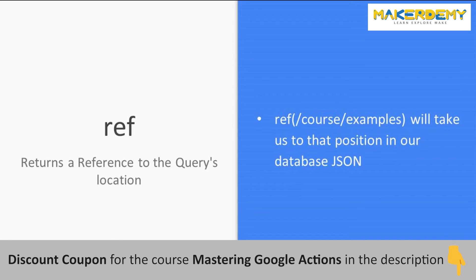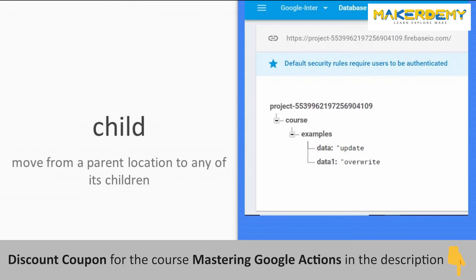Ref. Ref returns a reference to the query's location. This is the function with which we will move through our JSON-like database. We can move to a particular position by giving in the direction like this. Child function. This is again a function used to move from a parent location to any of its children in both ref and child. You can even give deeper slash-separated paths like this.